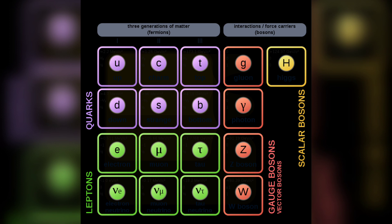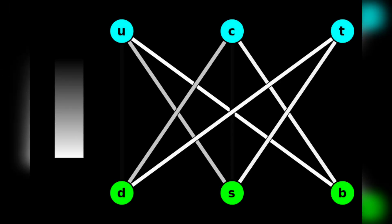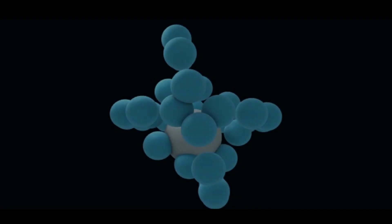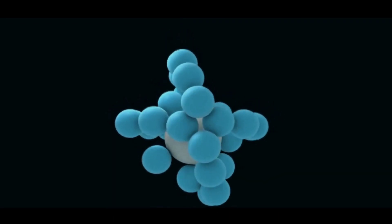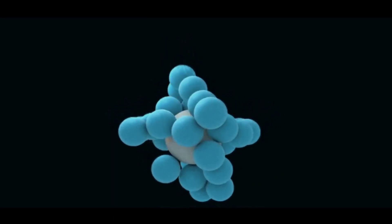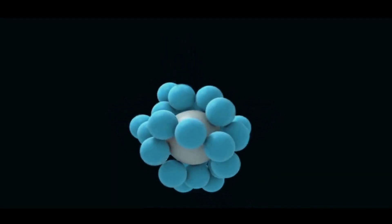Fermions have six types called quarks. They are: up, down, top, bottom, charm, and strange. All of them work together to form the nucleus consisting of protons and neutrons.